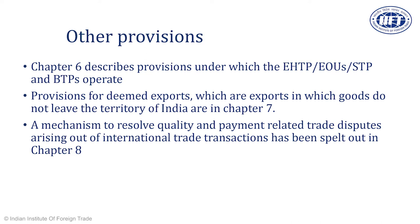Chapter 6 of the foreign trade policy covers the broad principles on Export Oriented Units (EOUs), Software Technology Parks, and Biotechnology Parks. These are special units given long-term exemption from payment of duties, provided they have a net free foreign exchange earning in a certain time period. Exporters who have units in these categories operate under chapter 6, and the provisions of chapters 3, 4, and 5 usually do not apply to them.